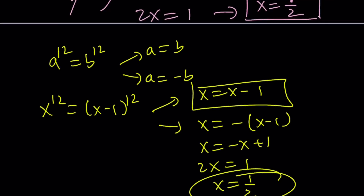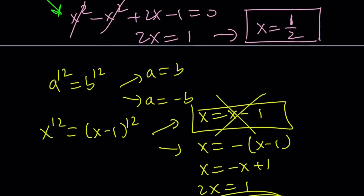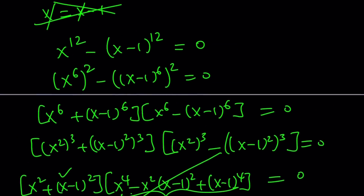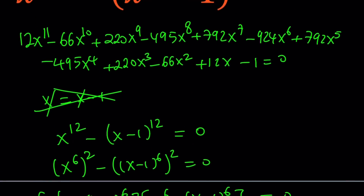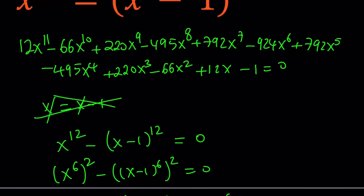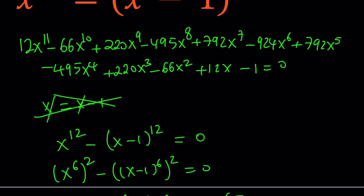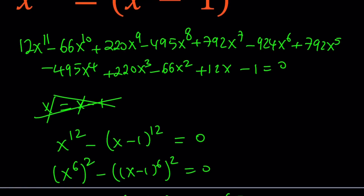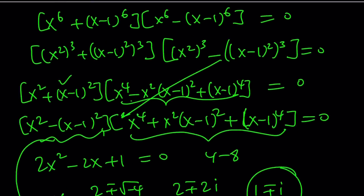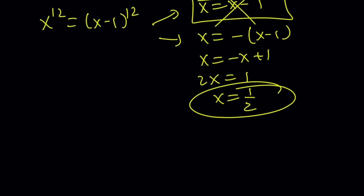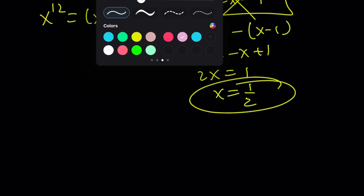Obviously the first case gives no real solutions. But there are complex solutions — because when x to the power 12 canceled out, we got an 11th-degree polynomial, so there are supposed to be 11 solutions. I'm going to show you, using Wolfram Alpha, what those solutions are. But first let me walk you through a method for finding all solutions.